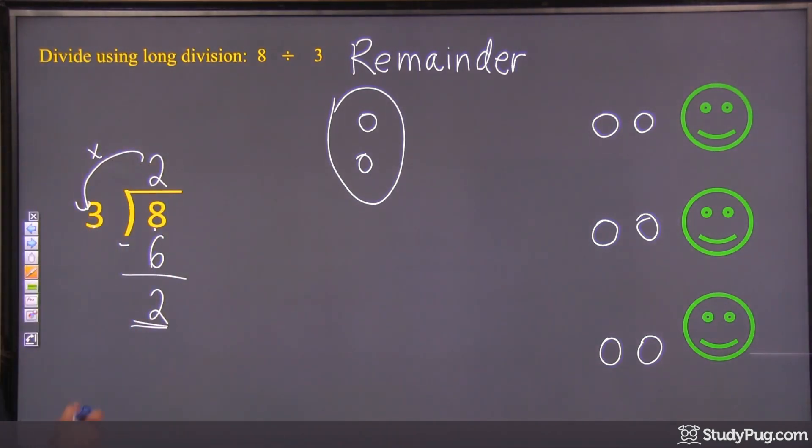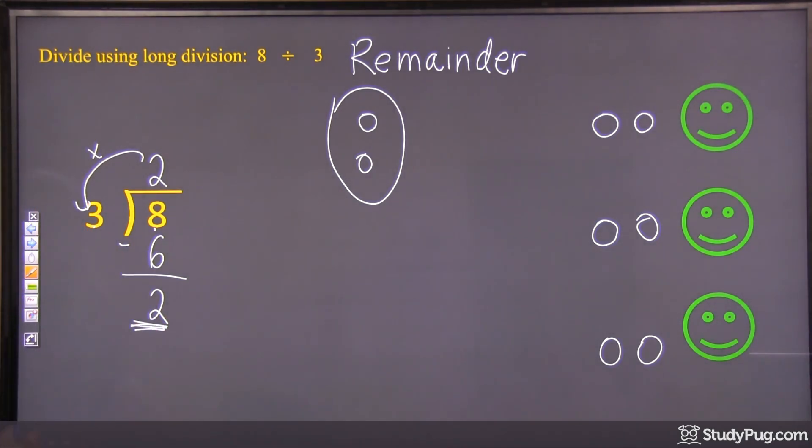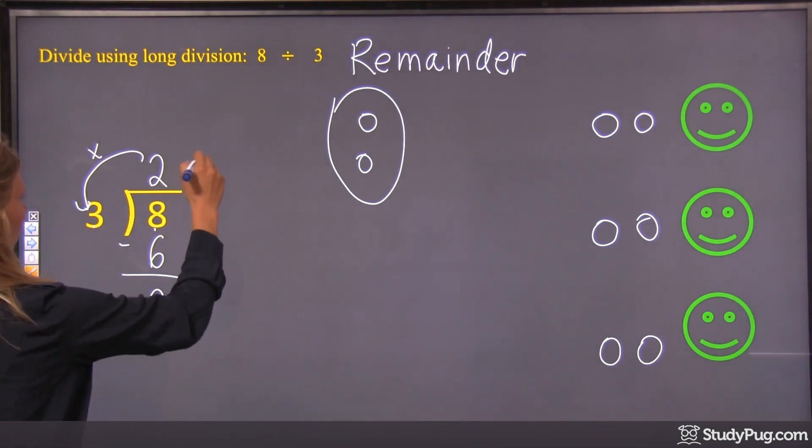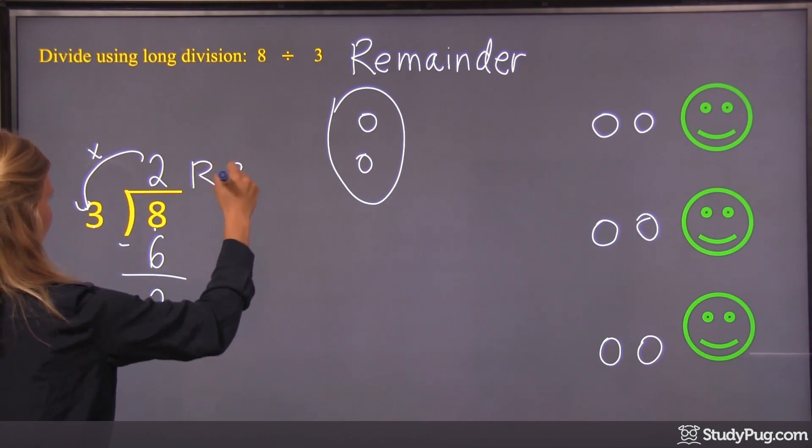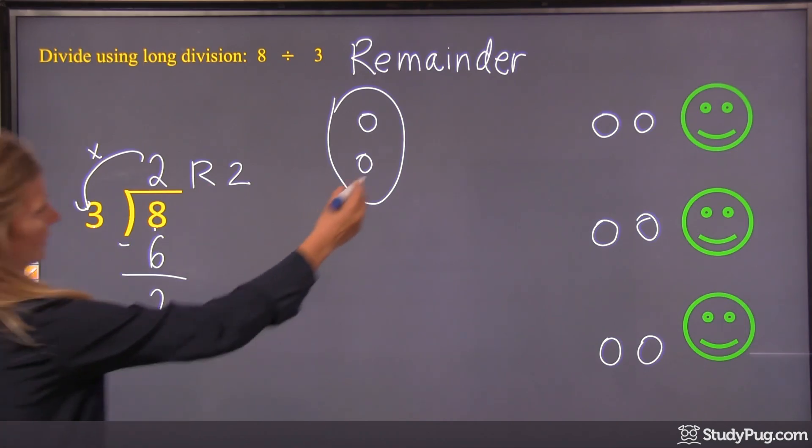So instead, here, when we have something left over and we can't do any more division, we write remainder 2. So we'd write R2 to show that there's a remainder of 2. So once we've finished our division, there's also going to be a remainder of 2 left over, which is this right here.